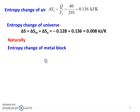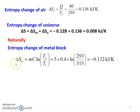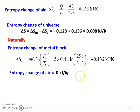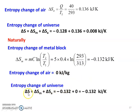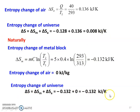For the natural process: entropy change of the metal block = M × C × ln(T2/T1) = 5 × 0.4 × ln(293/313) = −0.132 kJ per Kelvin. Entropy change of the universe = entropy change of the metal block + entropy change of the air = (−0.132) + 0 = −0.132 kJ per Kelvin. So, for the Carnot case the answer is 0.008 kJ per Kelvin, and for the natural process it is −0.132 kJ per Kelvin.